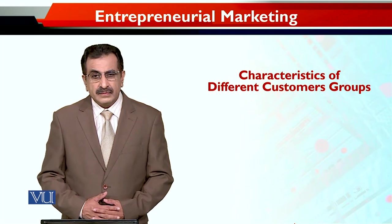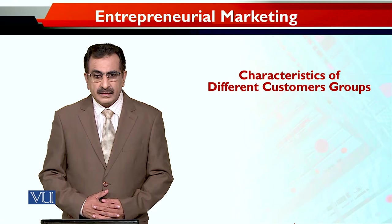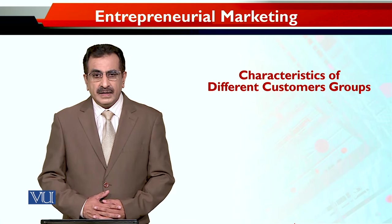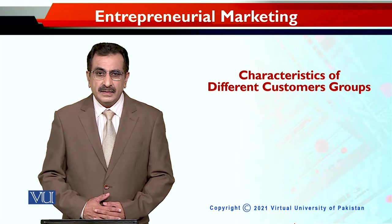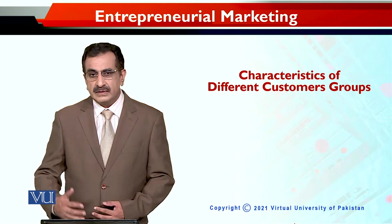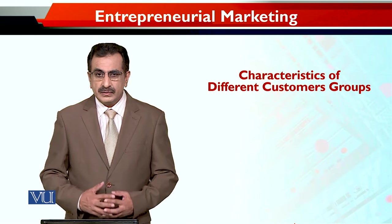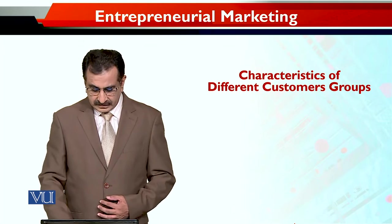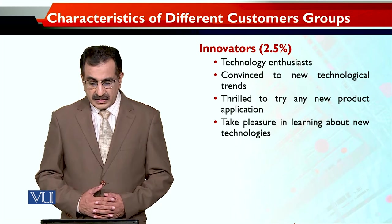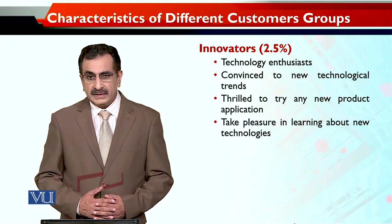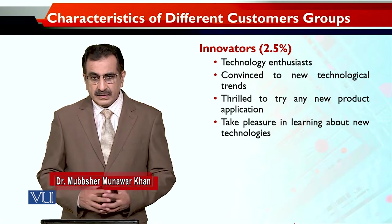Understanding the characteristics of different customer groups is very important for quick adoption and diffusion of information, so that more and more customer groups adopt the product in a shorter span of time. The first group is innovators, and we know that it's about 2.5% of our customers — so it's a very small niche.